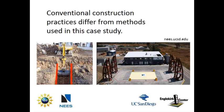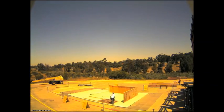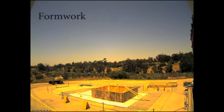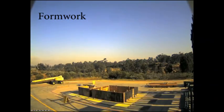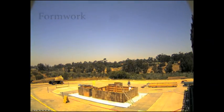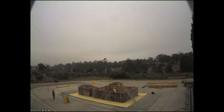Formwork in the field is required if the sidewall of the foundation extends above the natural grade or ground level. Footing construction begins with the erection of formwork, which is typically a temporary stiff form that provides a mold for concrete to be poured into. After the concrete is cured sufficiently such that it is self-supporting, the formwork is removed.